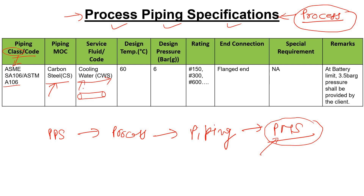What will be the design temperature of this cooling water supply line? The design temperature will be 60 degrees Celsius. The operating temperature of cooling water is typically around 30 to 38 degrees Celsius, which is why the design temperature is set at 60. Sometimes you will see maximum operating temperature used instead. Similarly, the design pressure is 6 bar, while the typical operating pressure in cooling water lines is 3.5 bar.